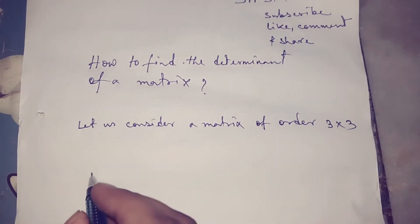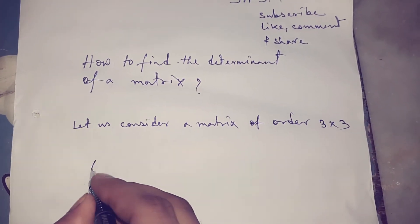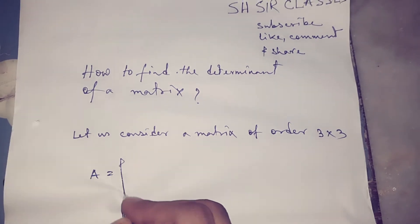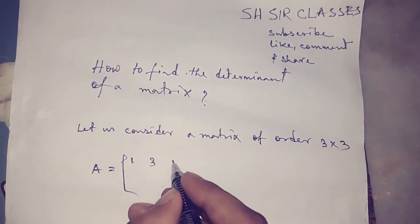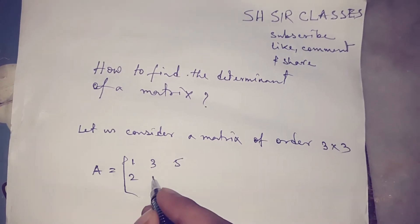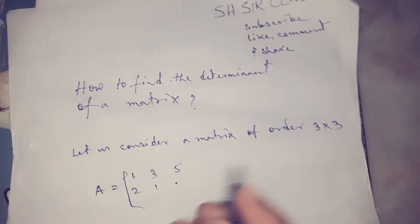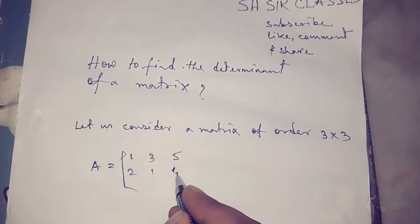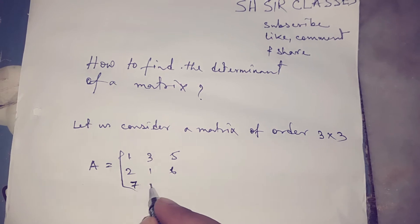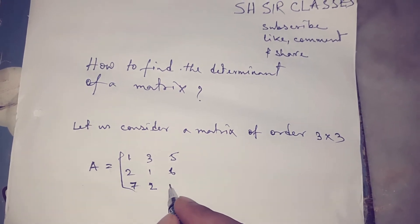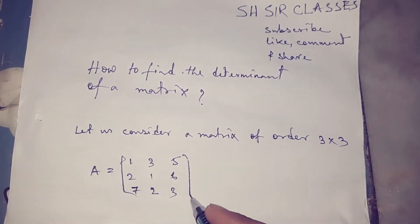Let us consider a matrix of order 3 by 3. The matrix is A equal to: first row 1, 3, 5; second row 2, 1, 6; third row 7, 2, 3.